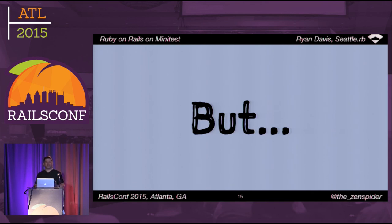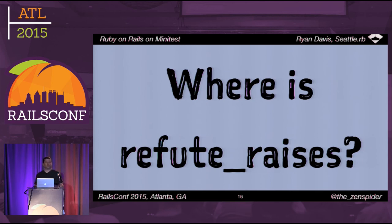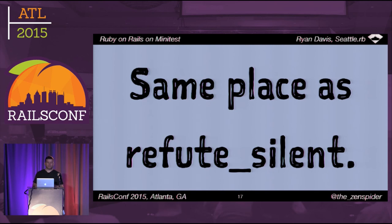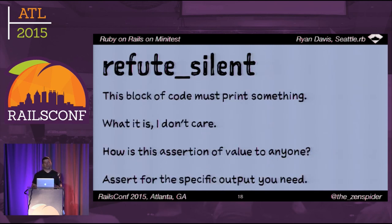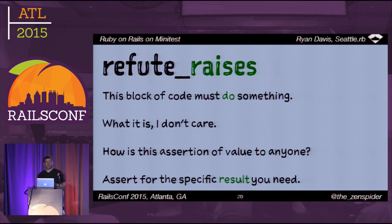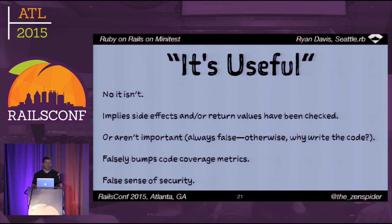I'll describe why some negative assertions are missing. The question of 'where is refute_raises or assert_not_raised?' — it's the same place as refute_silent. Refute_silent says that this block of code must print something, but what it is, I don't care — that is a valueless assertion. What you should be asserting for is a specific output. In the same vein, refute_raises says that this block of code must do something, but what it is, I don't care. Instead you should be asserting for the specific result or side effect you actually intend.